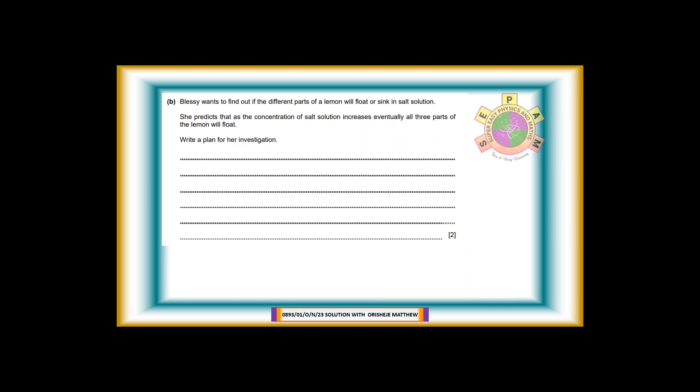12b. Blessy wants to find out if the different parts of a lemon will float or sink in salt solution. She predicts that as the concentration of salt solution increases, eventually all three parts of the lemon will float. Write a plan for her investigation. Answer: She makes different concentrations of salt solution by adding different amounts of salt to water. She drops each part of the lemon into the salt solution and see if it floats.